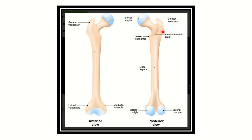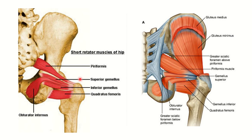We want to look at the muscles attaching to the supramedial surface of the greater trochanter. Here we can see the different muscles attached: this is Piriformis, this is Gemellus Superior, this is Gemellus Inferior, and this is Obturator Internus. In the second picture also we can see Piriformis, Gemellus Superior, Gemellus Inferior, and Obturator Internus.